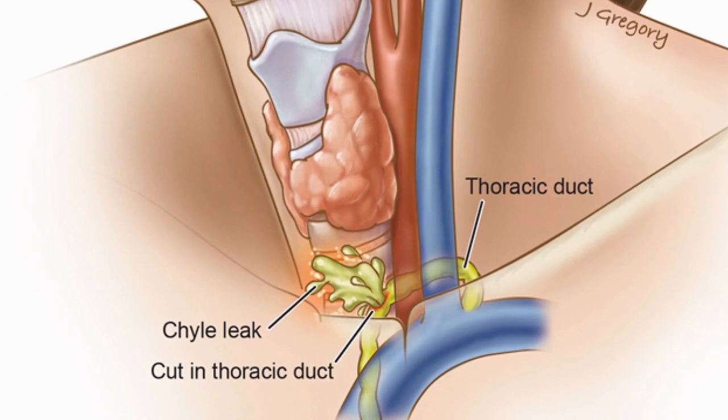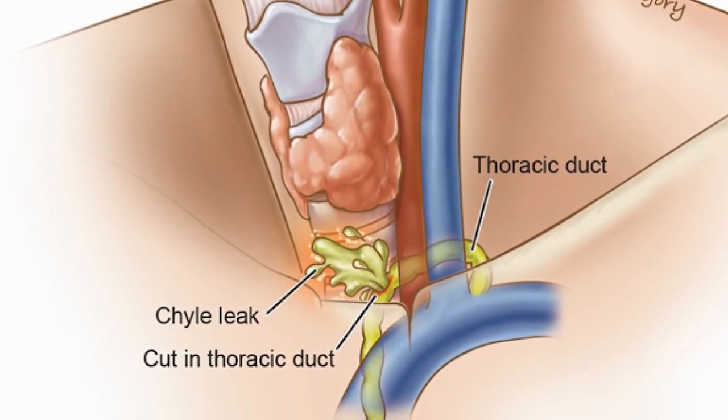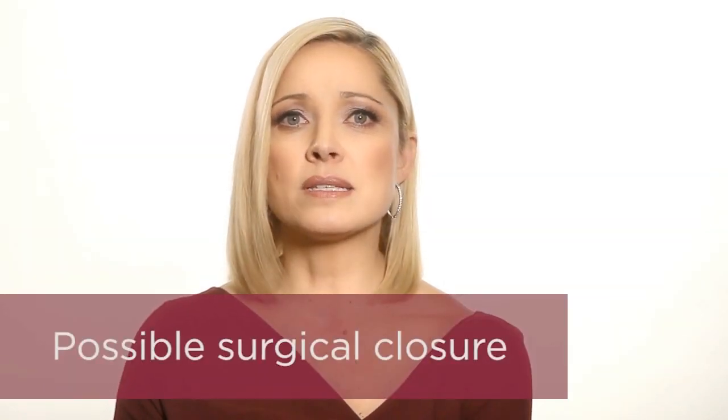Chyle is a fluid that runs through the lymphatic vessels that travel from the gastrointestinal tract up to the neck. If these very small lymphatic vessels are interrupted, they can leak under the skin. A chyle leak is usually recognized by your surgeon during the procedure and corrected before the end. However, in very unusual circumstances, the leak may not be recognized or the repair may not hold. If this happens, your surgeon can insert a drain and put you on a low-fat diet. If the leak persists or is considered a high-volume leak, it may be necessary to surgically close the duct. The risk of this complication is very small during thyroid surgery but is more common if lymph nodes on the side of the neck are also removed.